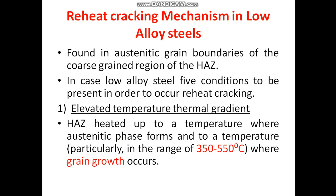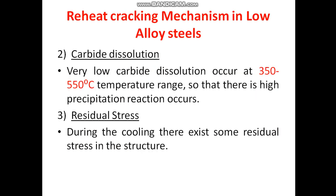Reheat cracking in low alloy steels is found at the austenitic grain boundaries of the coarse grain region of the heat affected zone. There are five conditions that must be satisfied for reheat cracking to occur. First is the elevated temperature thermal gradient: during the weld thermal cycle, the HAZ is subjected to temperatures where the austenitic phase forms above the AC1 temperature, and when exposed in the range of 350 to 550°C, grain growth occurs. Second is carbide dissolution: at this temperature range, carbide dissolution occurs.